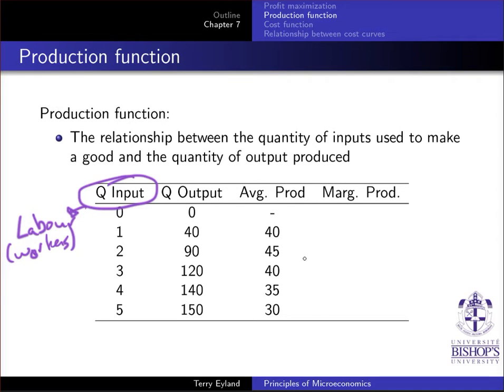So you can see that the average production of the group of workers is not necessarily constant. I don't have a constant 40 all the way through.